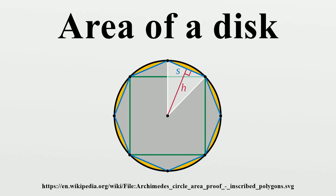Onion proof: Using calculus, we can sum the area incrementally, partitioning the disk into thin concentric rings like the layers of an onion. This is the method of shell integration in two dimensions. For an infinitesimally thin ring of the onion of radius t, the accumulated area is 2 pi t dt, the circumferential length of the ring times its infinitesimal width. This gives an elementary integral for a disk of radius R.